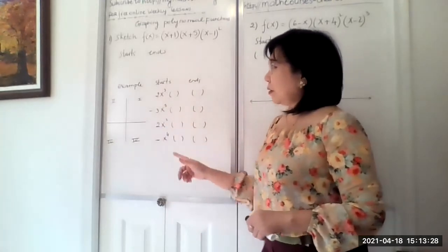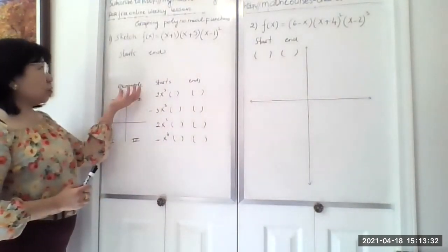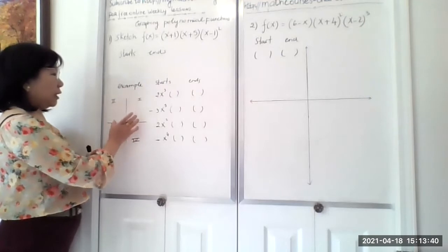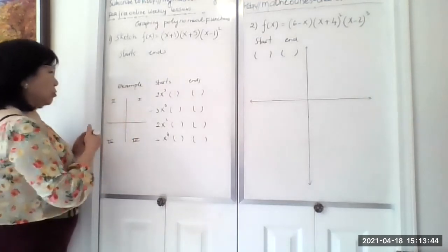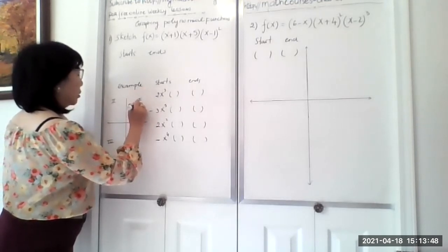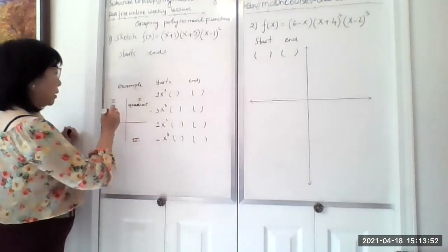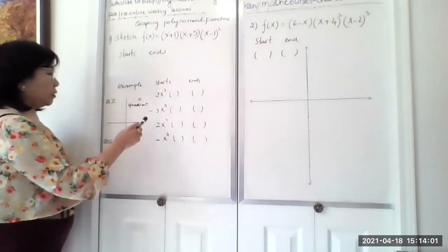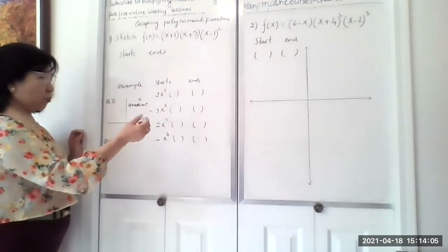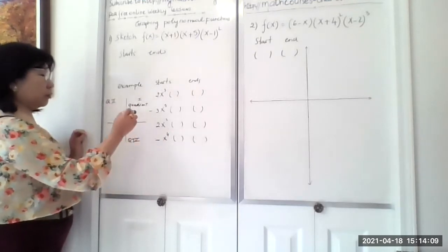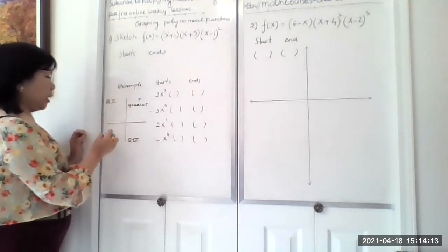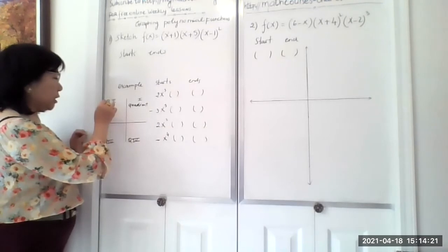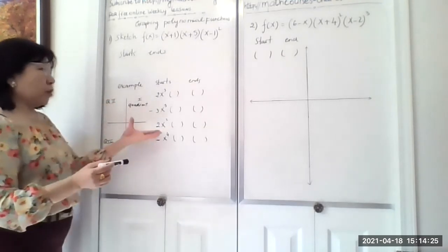Now let's look at the board. I'm talking about the example and I have starts and ends. I draw the coordinate plane divided into quadrants — quadrant one, quadrant two, quadrant three, and quadrant four. When you sketch a polynomial, you draw from left to right. You need to know whether to start the pen in quadrant three going up, or in quadrant two going down.